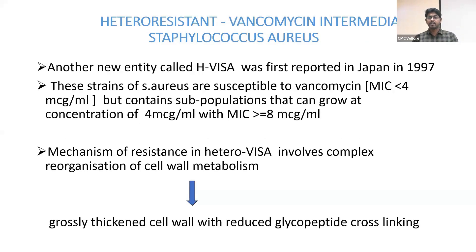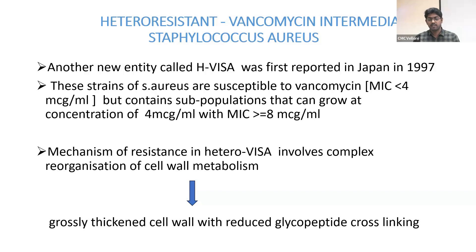Hetero-resistant vancomycin intermediate Staphylococcus aureus (hVISA) is a new entity; it was first reported in Japan in 1997. These strains are susceptible to vancomycin with MIC less than 4, but contain subpopulations that can grow at a concentration of 4 MIC and above, with a sub-MIC of more than 8. The mechanism of resistance involves complex reorganization of cell wall metabolism, which leads to thickening of the cell wall with reduced glycopeptide cross-linking.